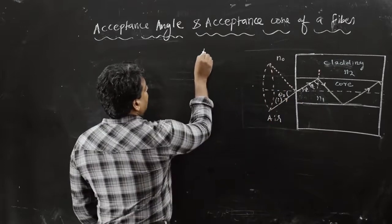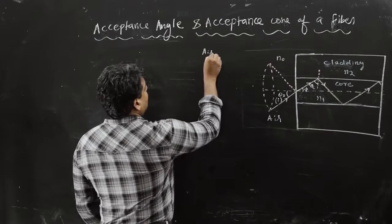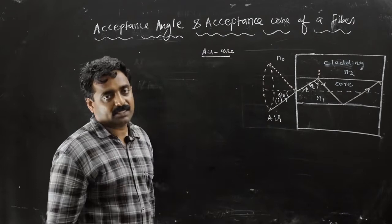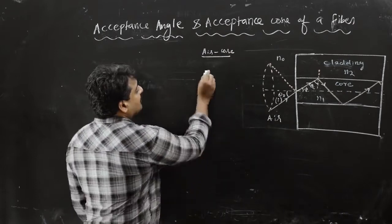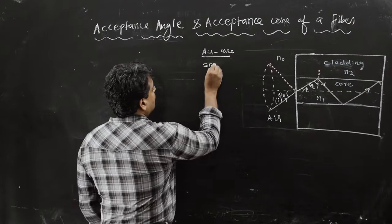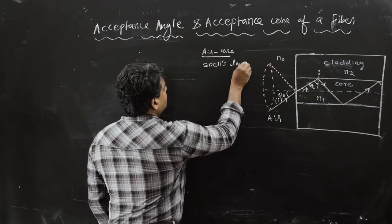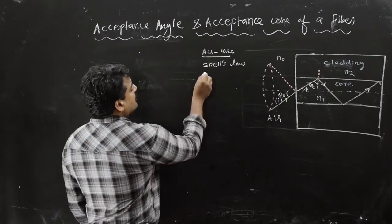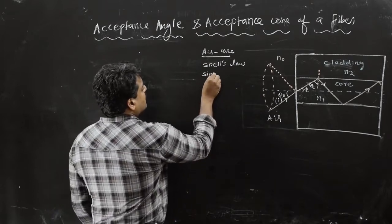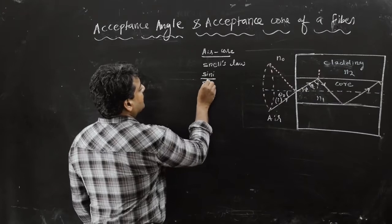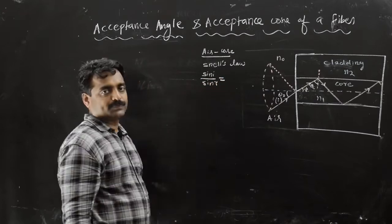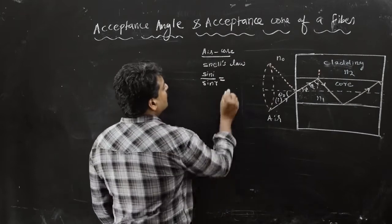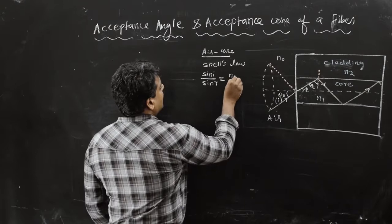First case: we are going to consider the air-core interface. At the air-core interface, applying Snell's law: sin i divided by sin r equals n2 by n1.